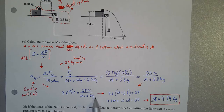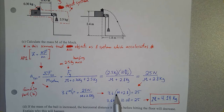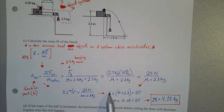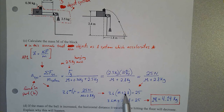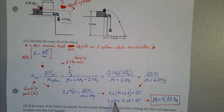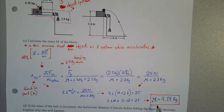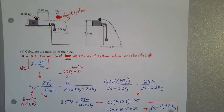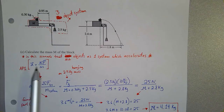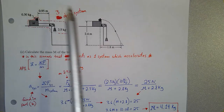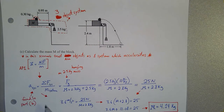We know the system acceleration from Part B is 3.6 m/s², and the only unknown is the block mass M. Multiplying each side by M plus 2.8, we get: 3.6 times (M plus 2.8) equals 25 newtons. Distributing and solving for M, the block mass is approximately 4.14 kilograms — all using Newton's second law applied to a system of accelerating objects.